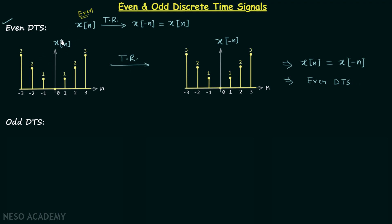Now look at the waveform of signal Xn. You will find it is symmetrical about the y-axis — on the right hand side of the y-axis we have the same structure as on the left hand side. Therefore even discrete time signals are always symmetrical about the y-axis. The signal is also a mirror image about the y-axis: if you flip the signal about the y-axis, you will have the same signal, which is what we do in the time reversal operation. All these points reflect to a single conclusion: the signal is even in nature.